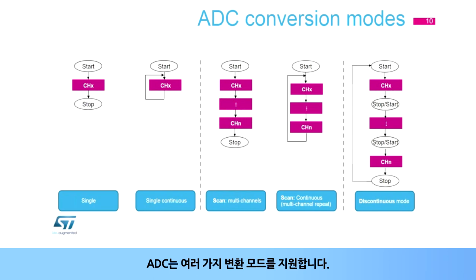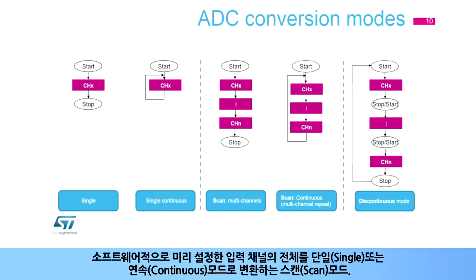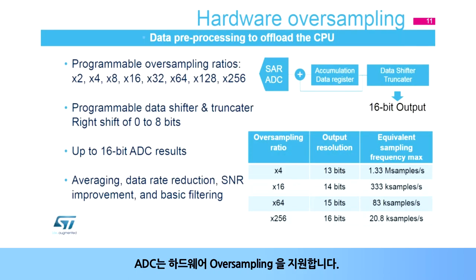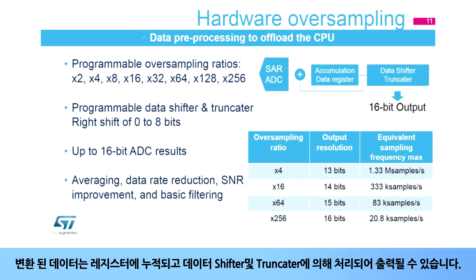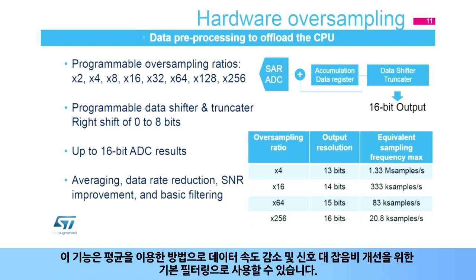AD converters support several conversion modes: single mode, which converts only one channel in single shot or continuous mode; scan mode, which converts a complete set of predefined program input channels in single shot or continuous mode; and discontinuous mode, which converts only a single channel at each trigger signal from the list of predefined program input channels. The ADCs support hardware oversampling — they can sample by 2, 4, 8, 16, 32, 64, 128, and 256 times without CPU support. The converted data is accumulated in a register, and the output can be processed by the data shifter and truncator. 12-bit data can be extended to be presented as 16-bit data. This functionality can be used as an averaging function or for data rate reduction, signal-to-noise ratio improvement, and basic filtering.